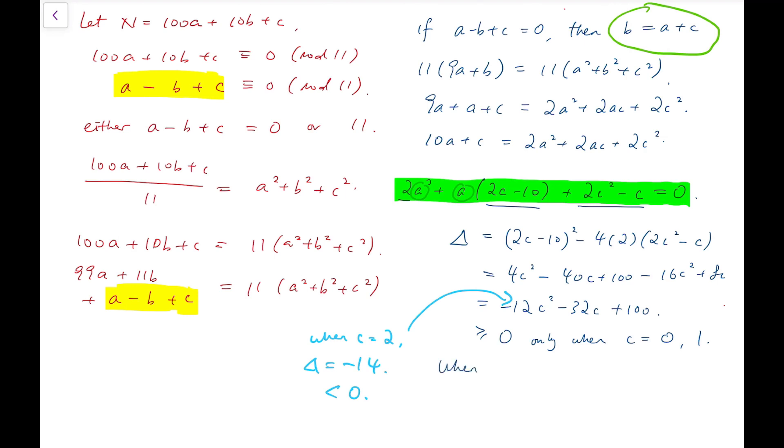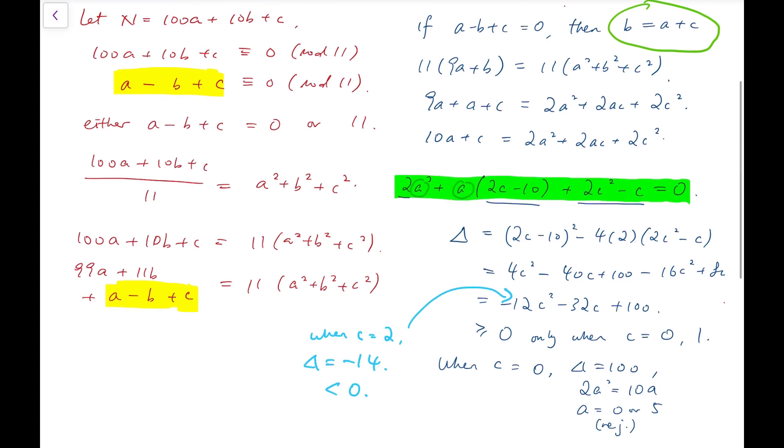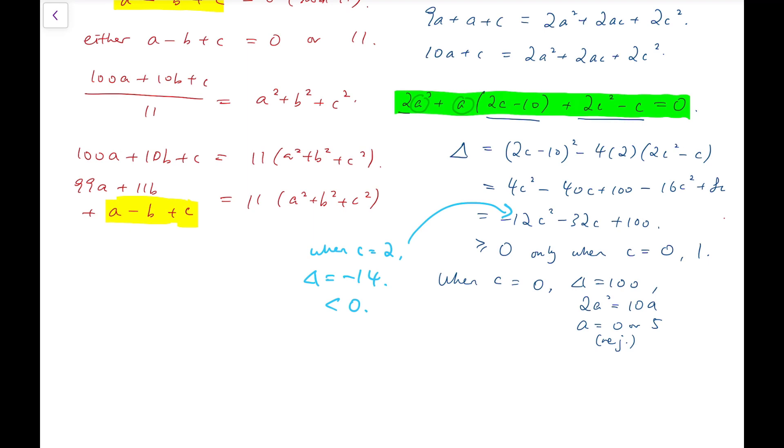Now when c is 0, then delta is 100, so that means that delta is a perfect square, so it is possible for a to have an integral solution. So now when c equals 0, the equation is very simple, which is that 2a squared equals 10a, so a is either 0 or 5. Of course we reject 0 because that's the hundredth digit, so it's impossible to be 0. So when a is 5, c is 0, therefore b is also 5. So N is then 550. That's one of the solutions.